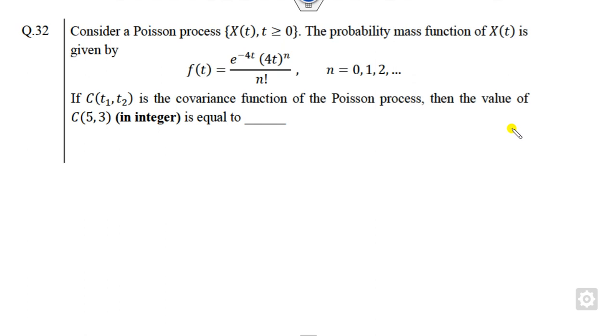This is a question related to the Poisson process where the probability mass function is given and you have to find the covariance. I will tell you the shortcut trick, but first I will explain what the covariance means.